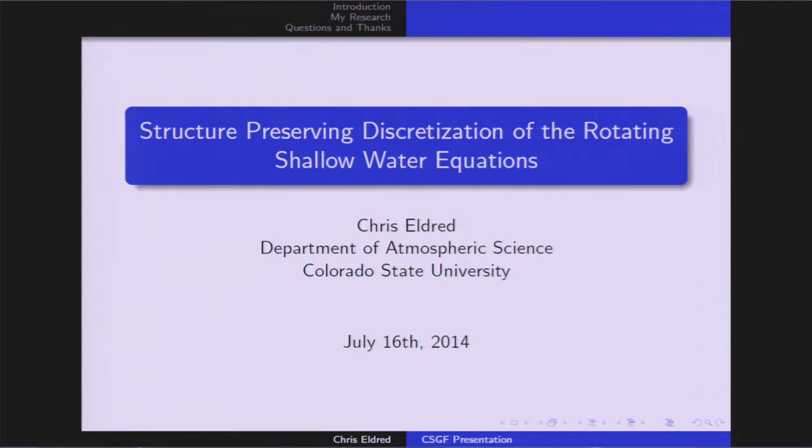As we'll see, all fluid dynamical systems have this very special Hamiltonian structure, and an easy and powerful way to get conservation properties is to discretize the equations in such a way that that Hamiltonian structure is respected.